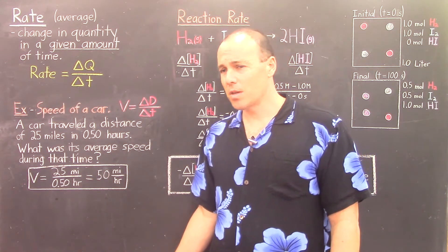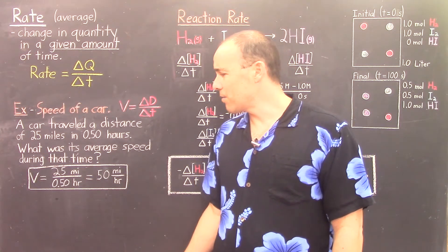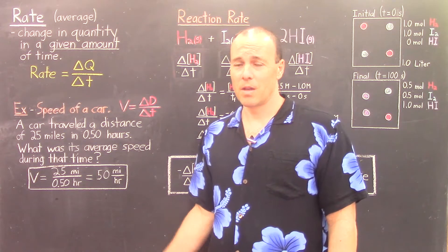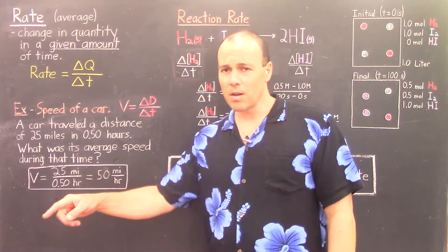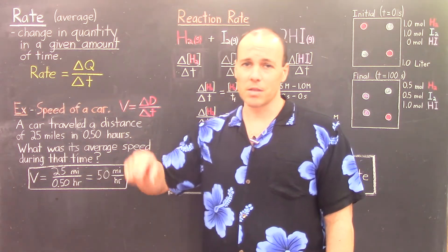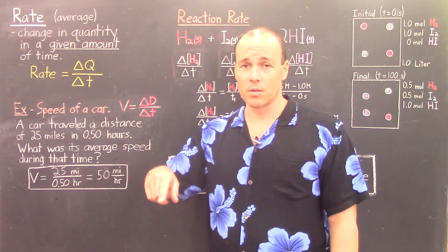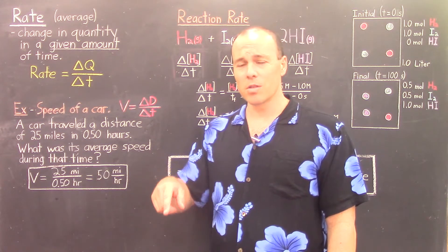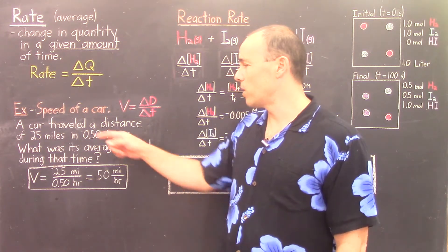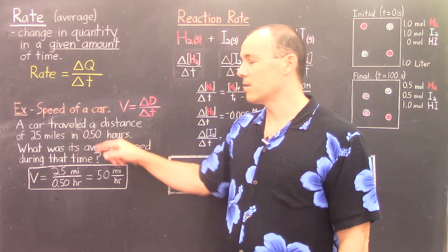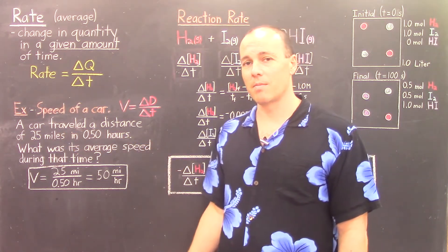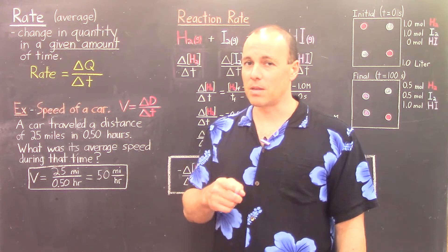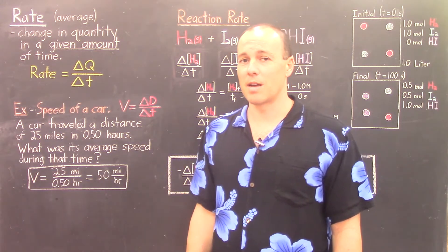Now this was the car's average speed during that time interval. The car could have gone faster and slower during the course of that time, just as long as it went a distance of 25 miles in that time. So that was the average speed during that time interval.